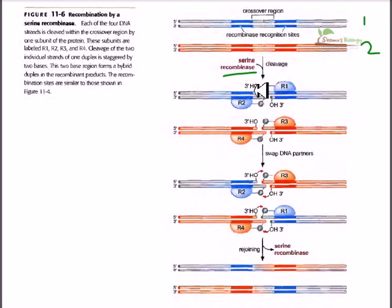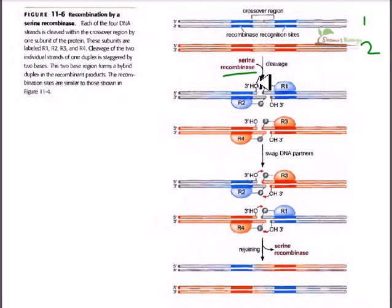The recombinases make a bond with the five prime phosphates and leave the three prime hydroxyl group in both strands. This is important because — as in the homologous recombination model — generating the three prime overhang is critical, since the three prime hydroxyl is the only way to start the DNA polymerization process. The oxygen of the hydroxyl will serve as a nucleophile and can attack the phosphate to reseal itself.